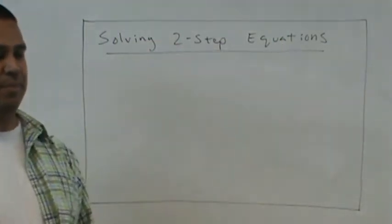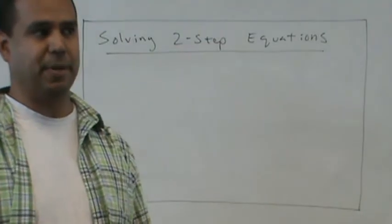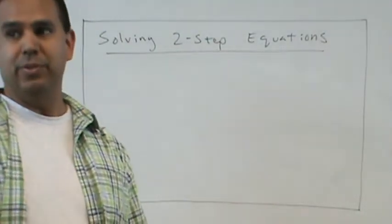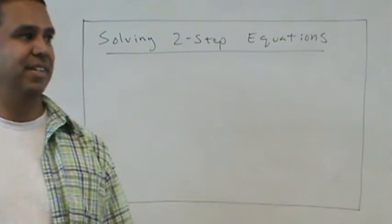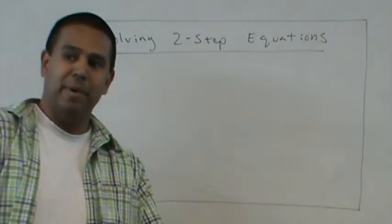Yesterday we went over one-step equations. What was the secret to solving a one-step equation? Use the inverse. Very good, always the opposite. So if we had a plus 3, you would do a minus 3.